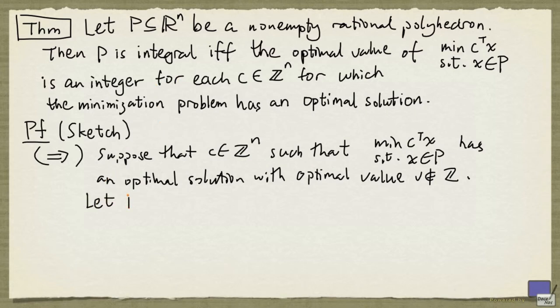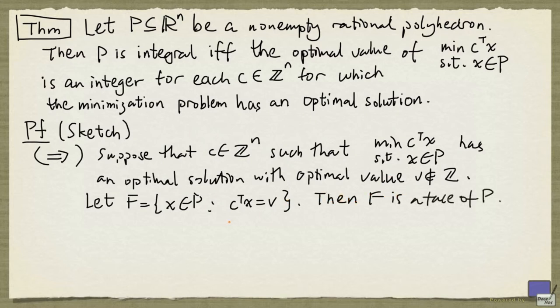Now let f denote the set of x in p such that c transpose x equals v. Notice that f is a face of p. But c has integer entries and v is not an integer. So whenever x has integer entries, this equation will not be satisfied. And so f is a face of p that does not have any integral vectors.